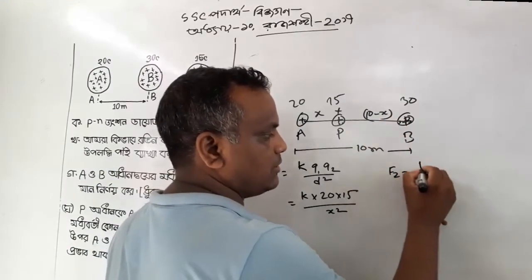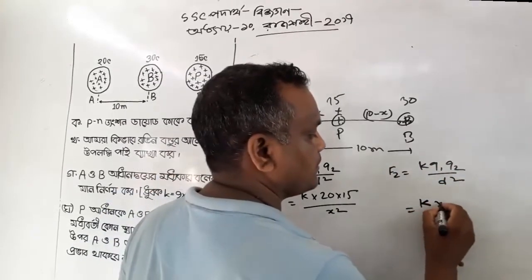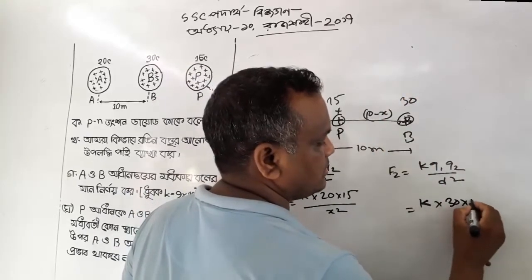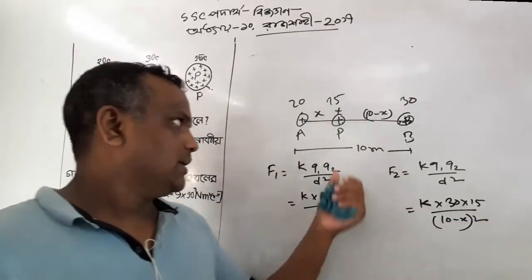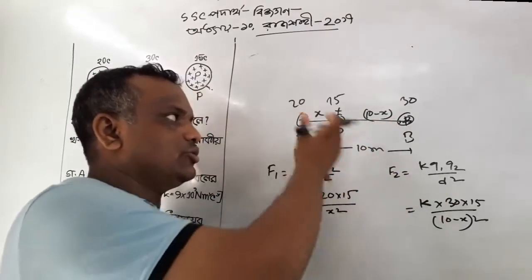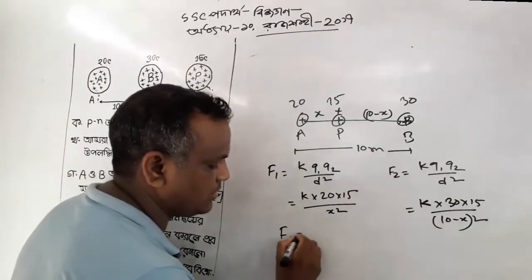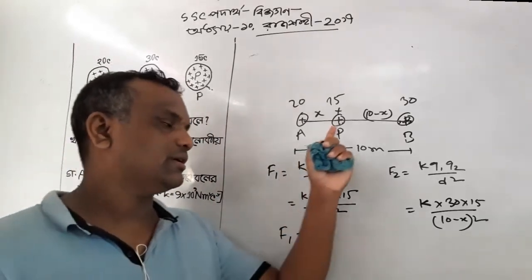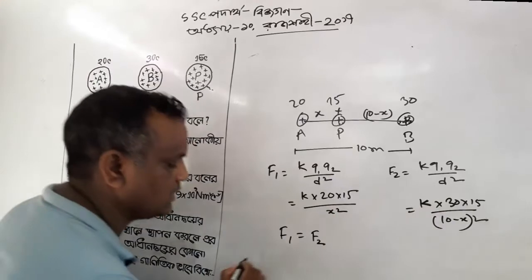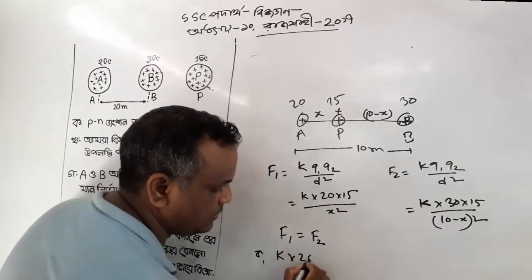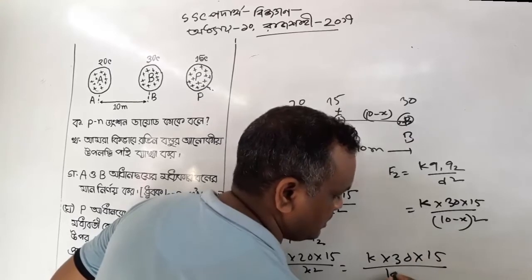What is F2? F2 is K, Q1, Q2 by D squared. K is the same. Q is the same. H is the same. D is the same. A is the same. F1 is F2. If you have the same, 10 minus x squared.